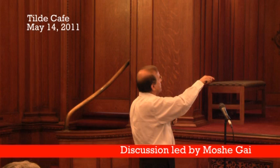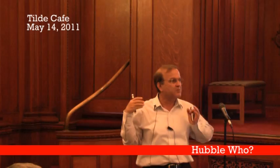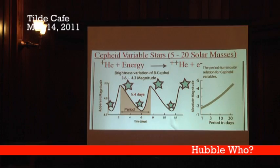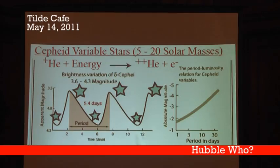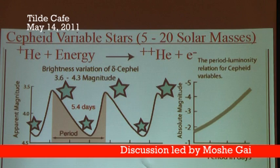A star that emits more light takes longer between dim and bright. So if it goes dim to bright and that takes 10 days, then we know that when the star is brightest, it emits so much light. We can measure exactly how much light the star emits by measuring how long it takes to go through the cycle. If the cycle is 10 days, it emits so much light; if the cycle is 20 days, it emits much more light.